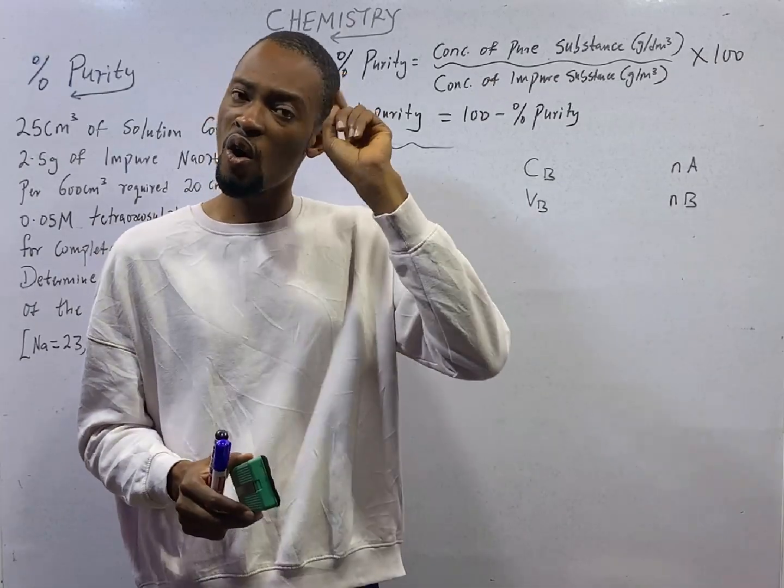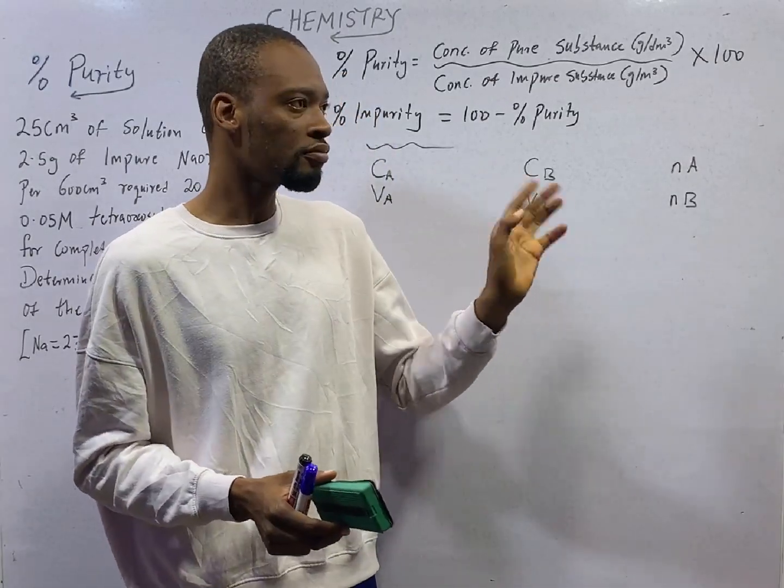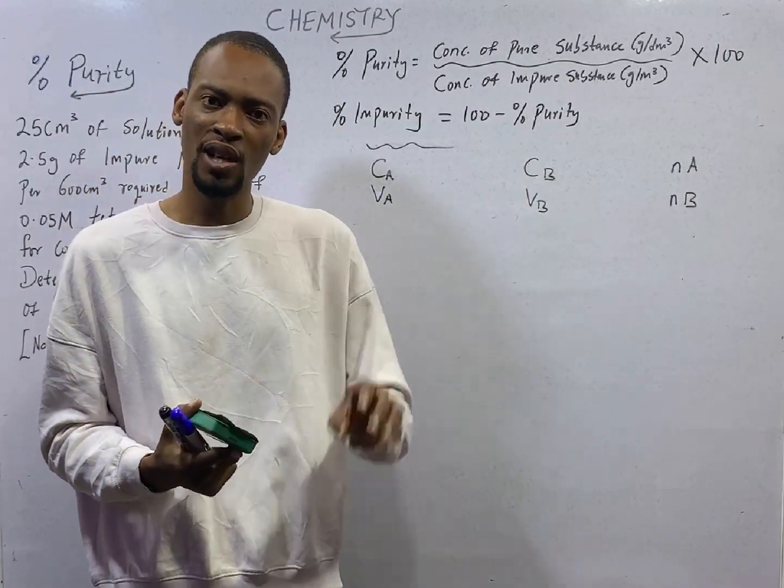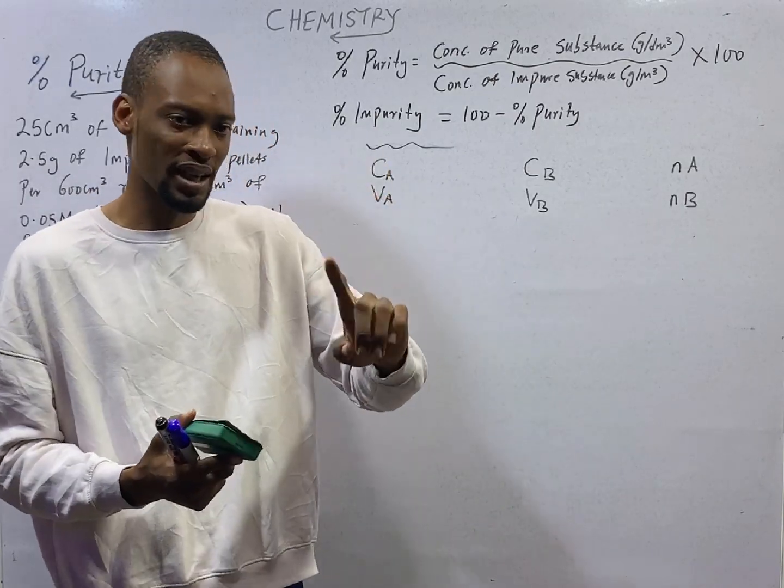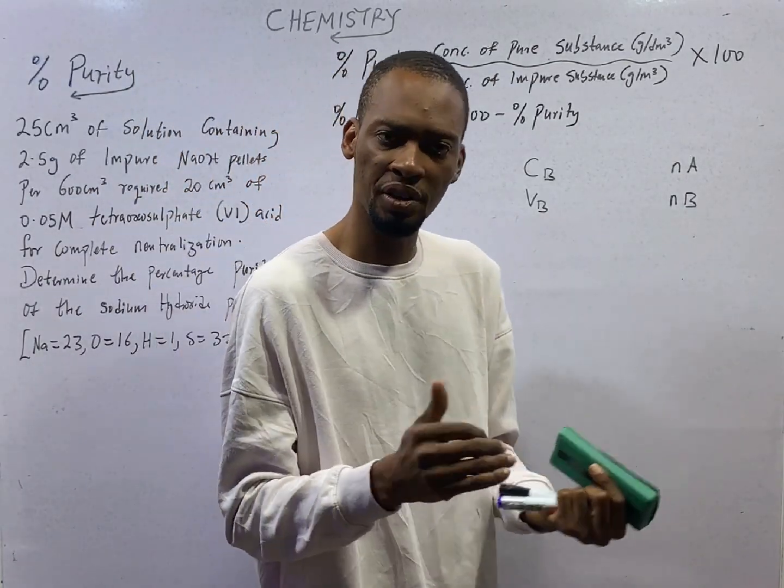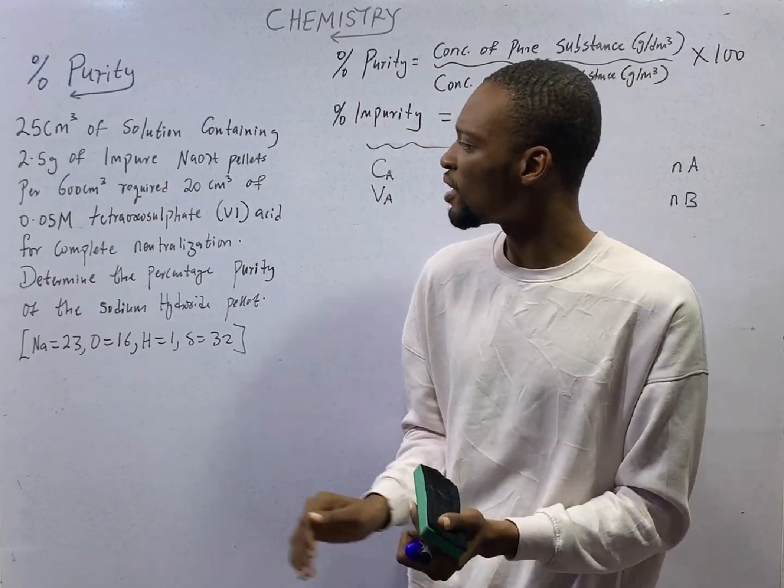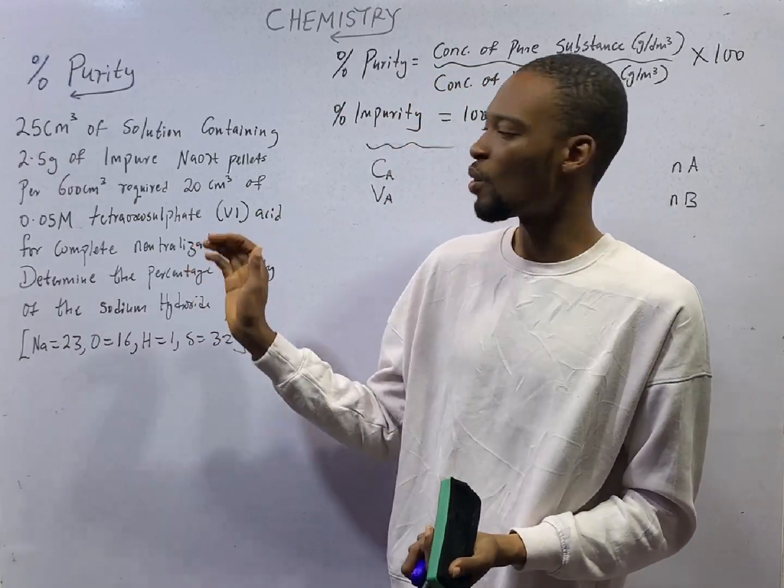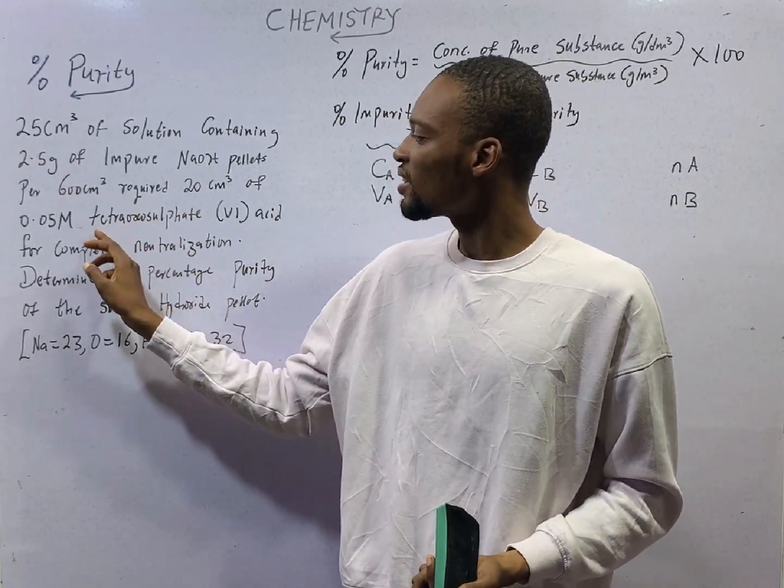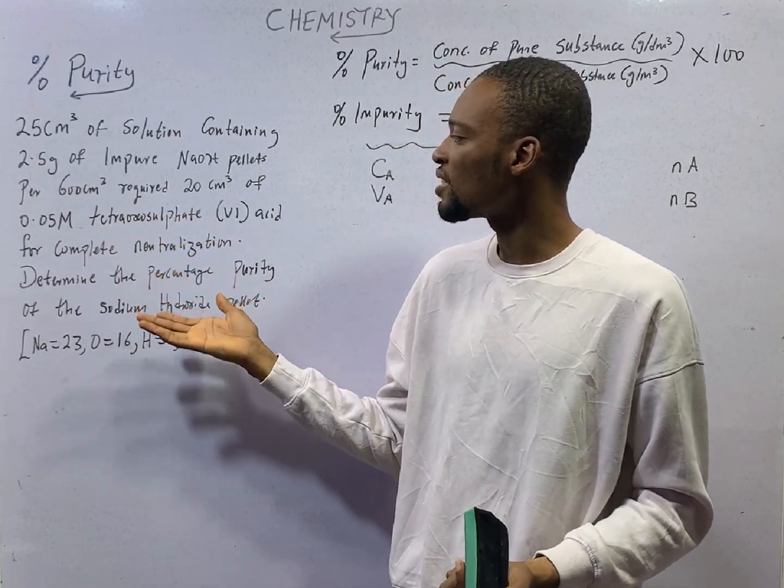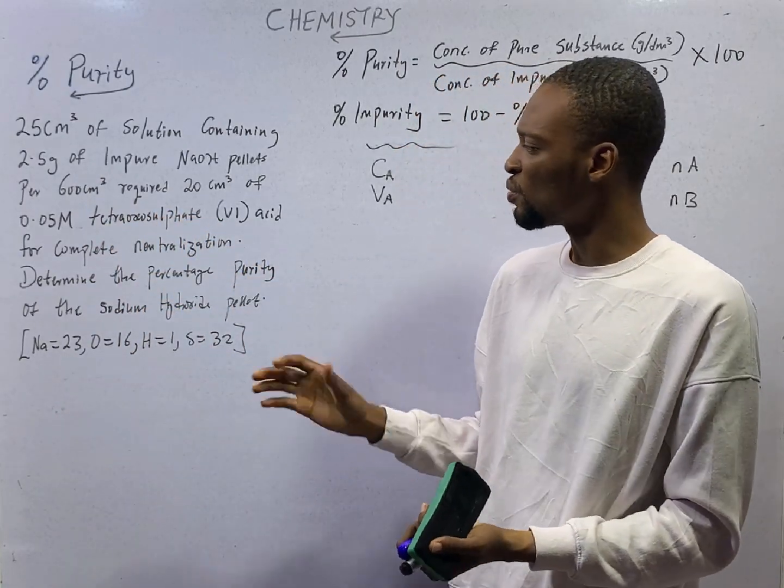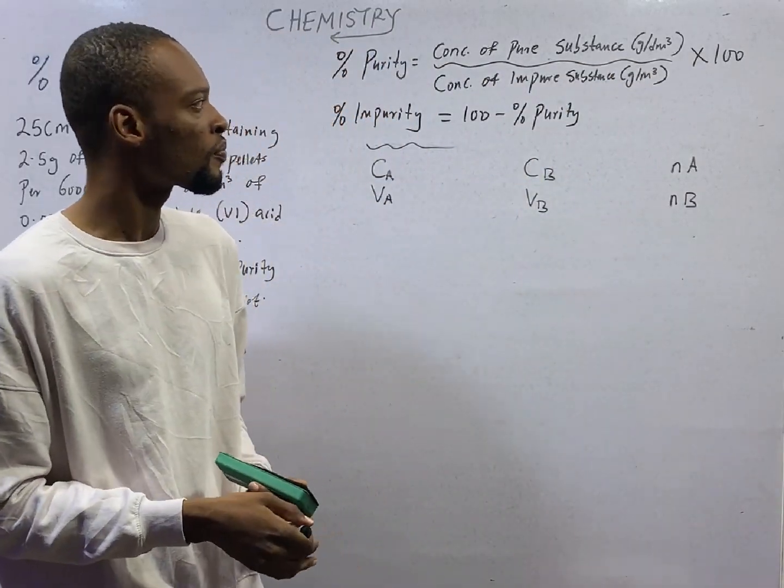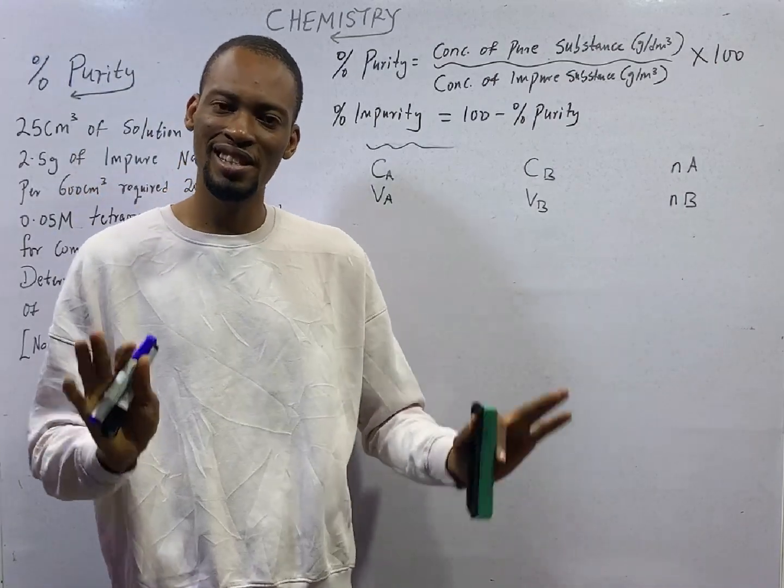Don't forget what we learnt under balancing of equation. In stoichiometry, we did balancing of equation and I taught you how to know when an equation is balanced. Under oxidation and reduction, which is redox reaction, we dealt with how to calculate oxidation number and how to name inorganic compounds. Like in this case, you can see tetraoxosulfate(VI) acid. From here, you know what it will be like and how to confirm whether it is tetraoxosulfate(VI).